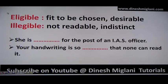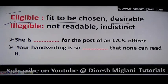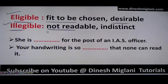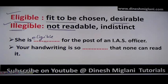Next: 'eligible' and 'illegible.' Eligible means fit to be chosen or suitable. Illegible means which cannot be read. Example: 'She is eligible for the post of an IAS officer' — meaning fit to be chosen — that is E-L-I-G-I-B-L-E. Illegible would describe writing that cannot be read.